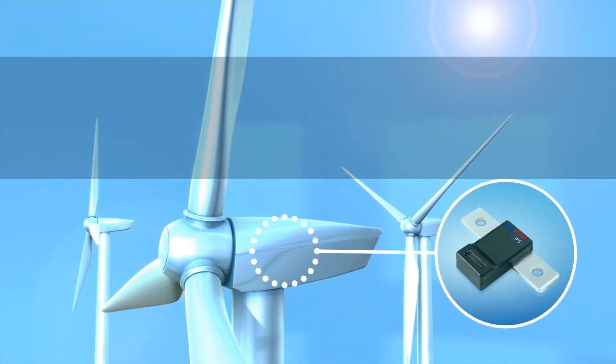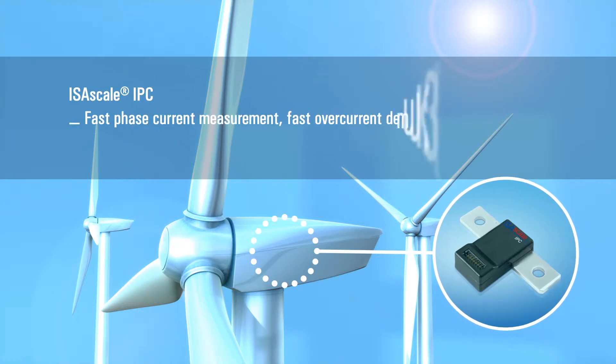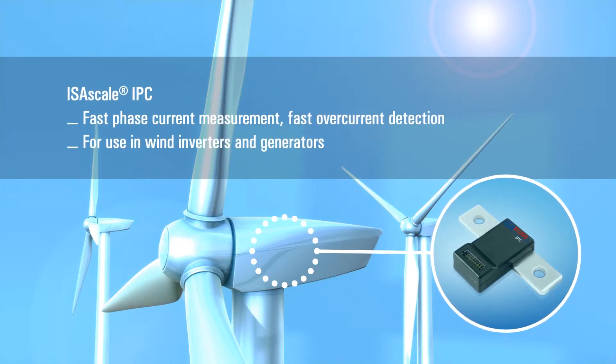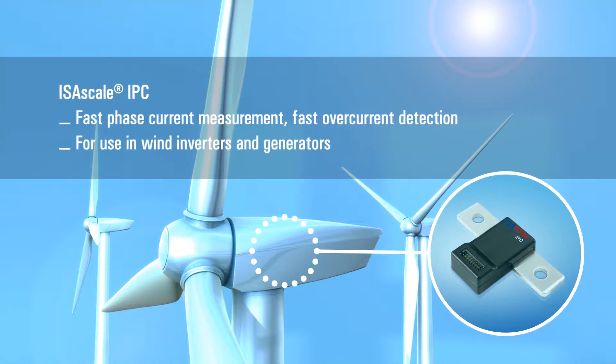Measurement values must be read quickly and precisely in modern wind turbines. Our IPC phase current modules are used for this application.